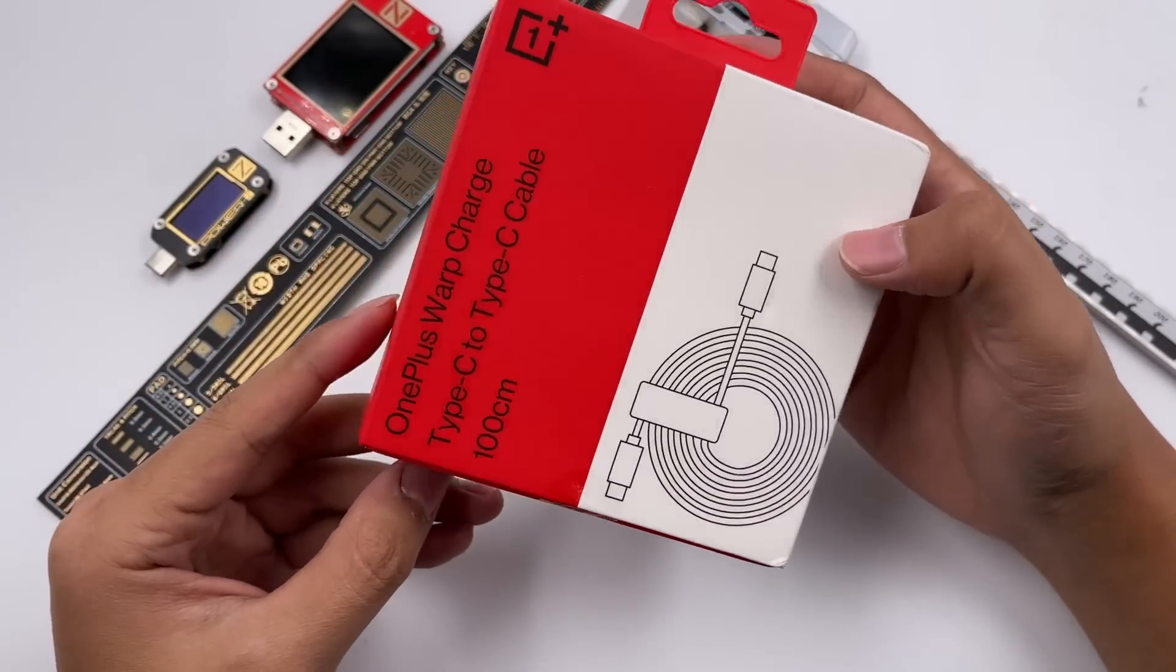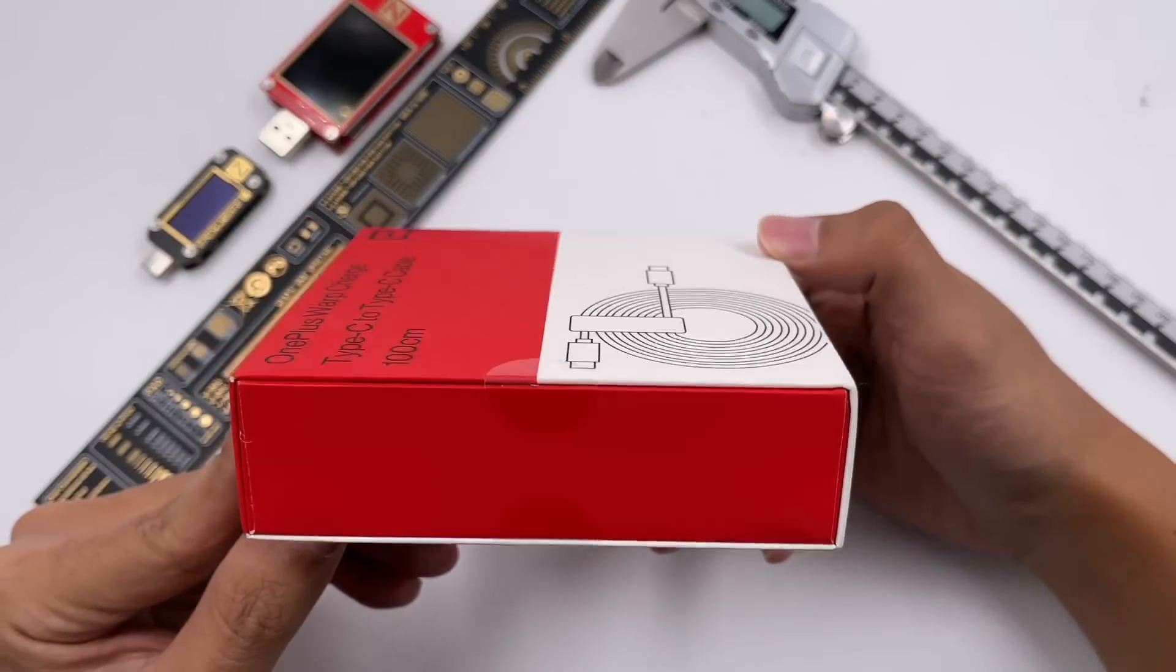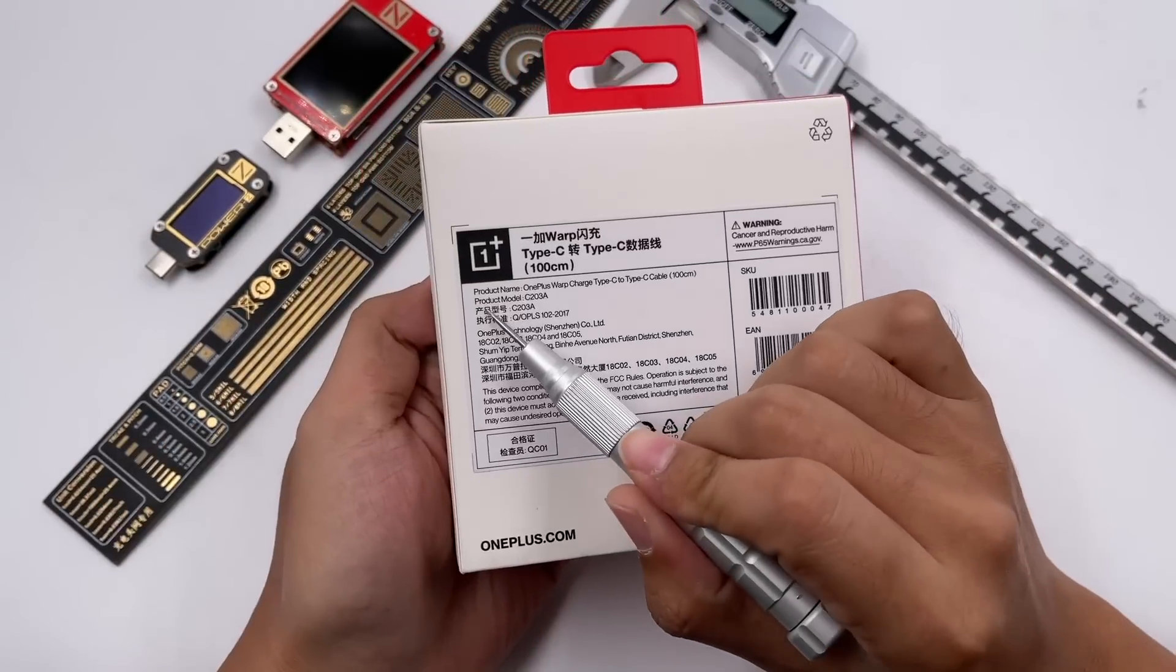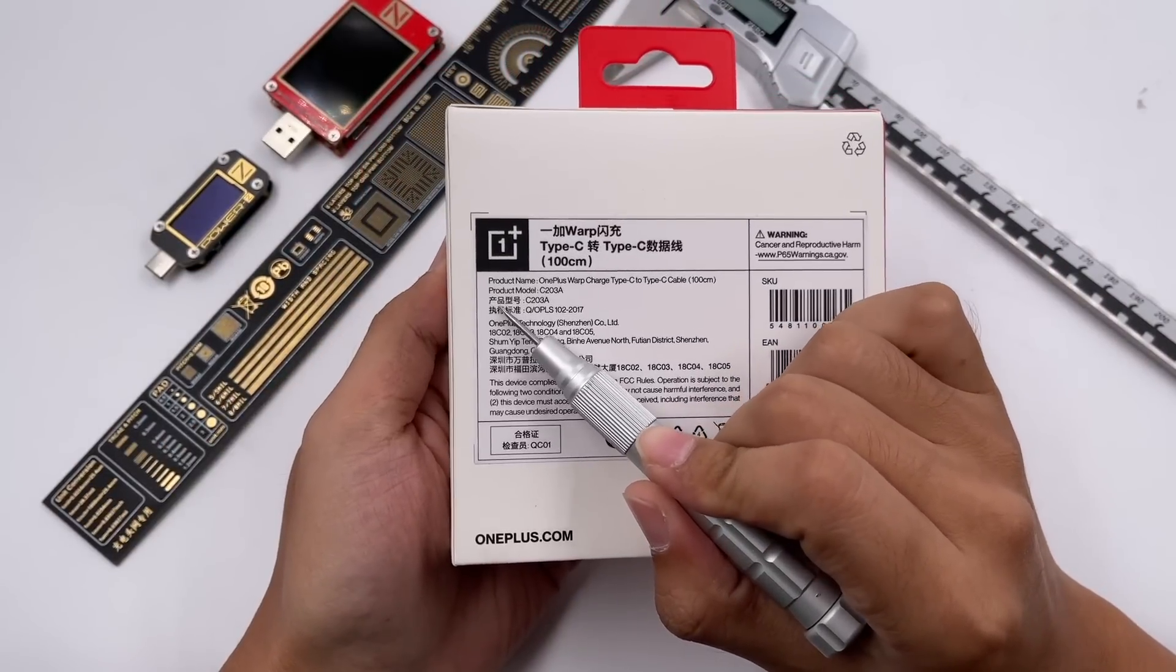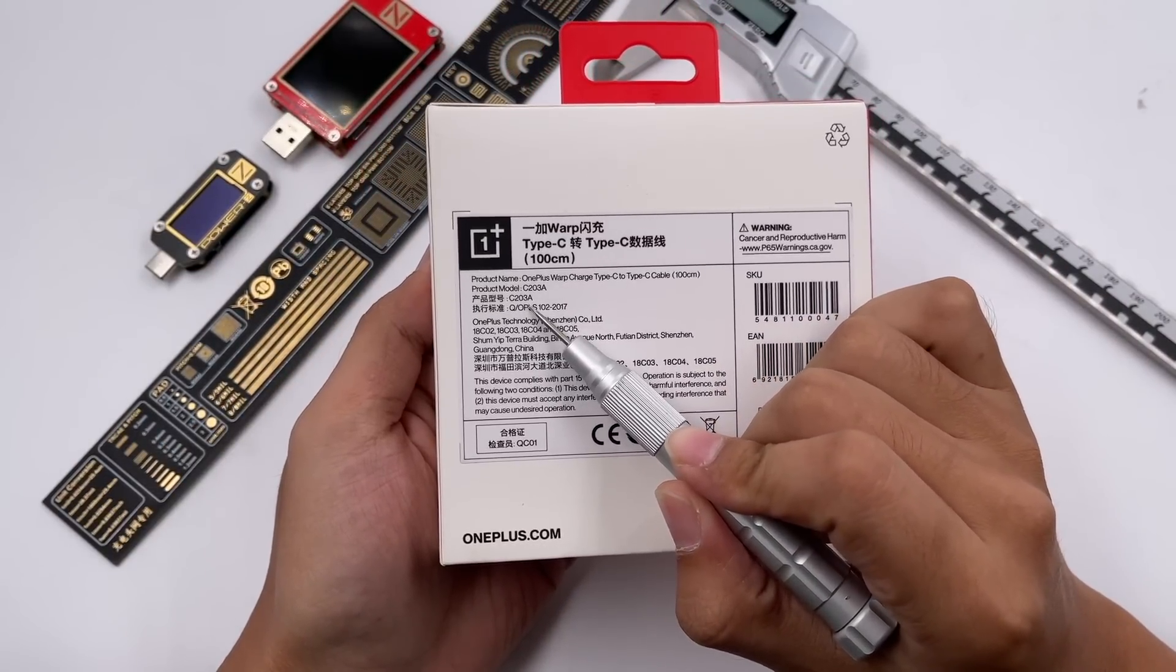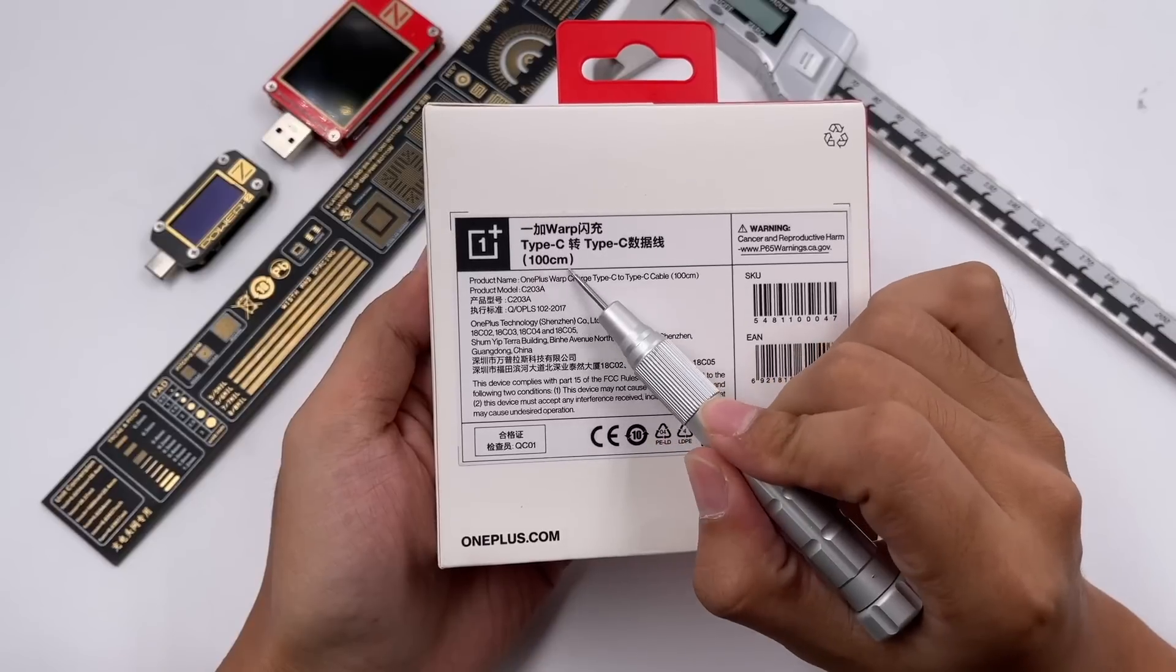The packaging is similar to that of the charger and continues the OnePlus red style. And let's take a look at the info. Model is C203A, 1m, manufactured by OnePlus technology.